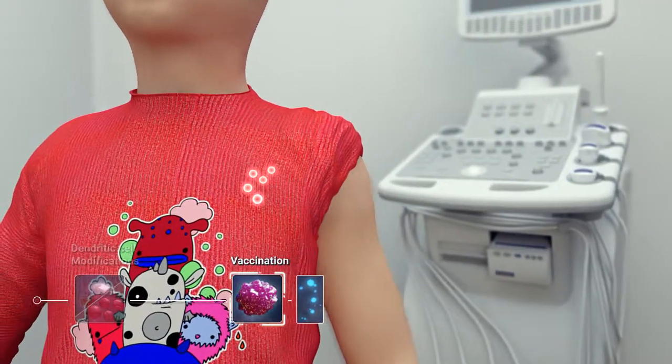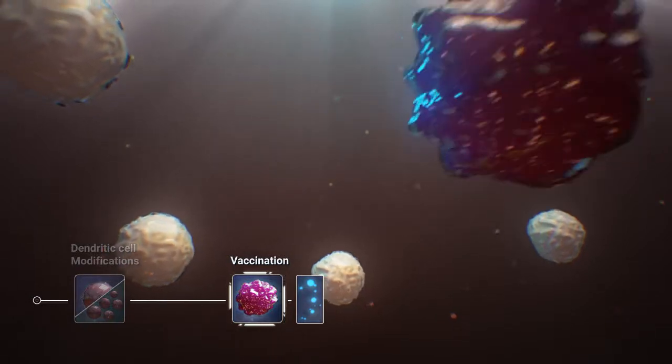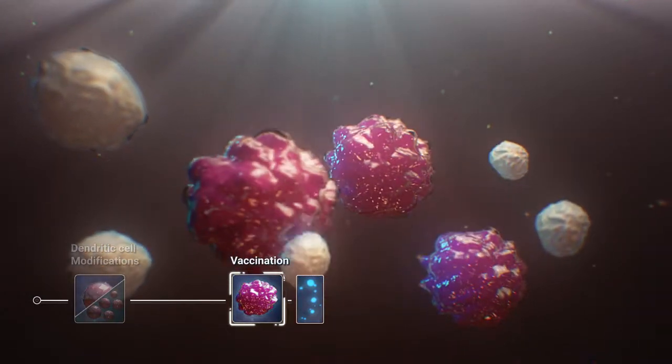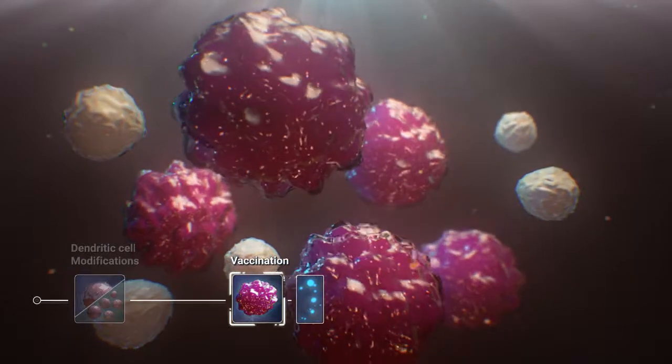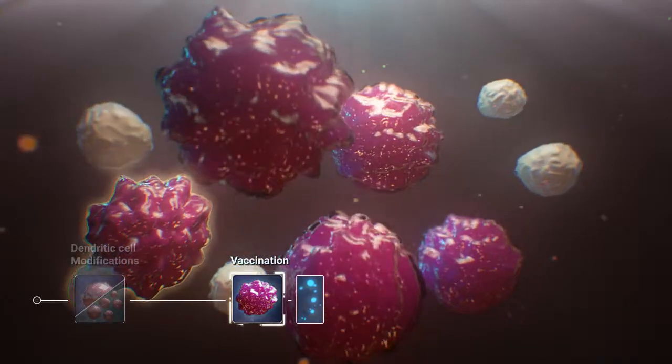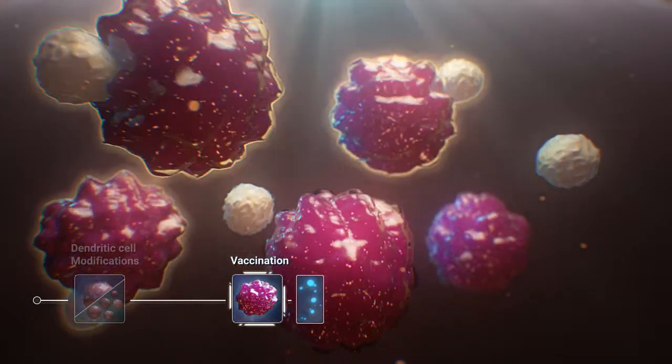The vaccination takes place close to lymphoid organs where the injected dendritic cells will encounter naive T cells. The dendritic cells will stimulate these naive T cells specific for the presented tumor antigens.